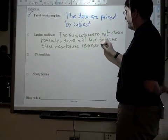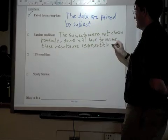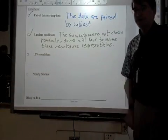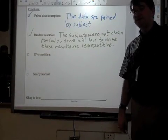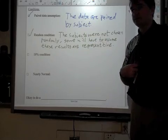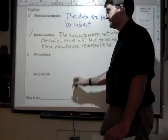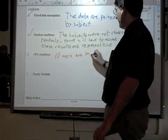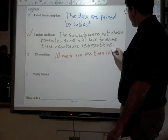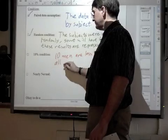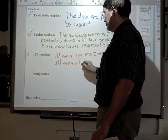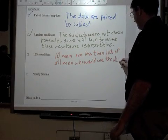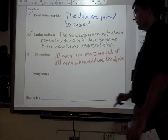So we will have to assume they are representative. Have to assume these results are representative. In other words, that they're typical of everybody else using this machine. Is it correct to make that assumption? We don't know. Honestly, probably not. But we have to do it. Because otherwise we wouldn't be able to proceed. The 10% condition, of course, we can verify. Because 10 men are certainly less than 10% of all men who would use this device. So that's satisfied.